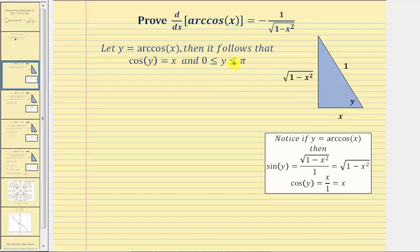But if y is in the second quadrant, then cosine y will be negative, so the x value would be negative. And because sine y would always be positive when the angle is in the first and second quadrant, we know the square root of the quantity one minus x squared would always be positive.